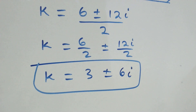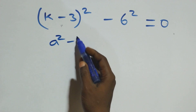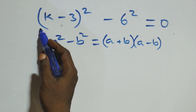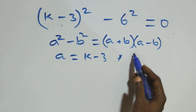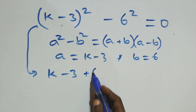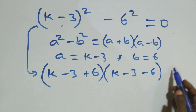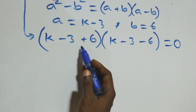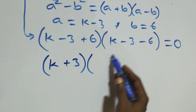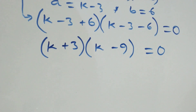Solving the second case, we again apply the difference of two squares: a^2 minus b^2 equals (a plus b)(a minus b), where a is (k minus 3) and b is 6. This gives (k minus 3 plus 6)(k minus 3 minus 6) equals 0, which simplifies to (k plus 3)(k minus 9) equals 0.